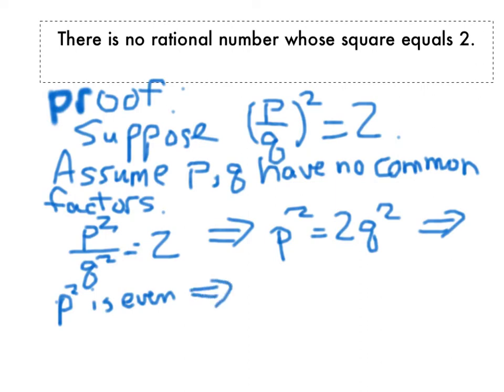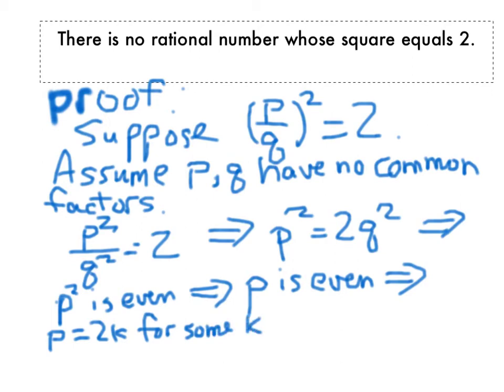Now it's a common fact that if a number squared is even, then the number had to be even. So we now know that p has to be even. So that means p is 2 times something. Let's call that something k. We don't know exactly what k is, but it's some integer.